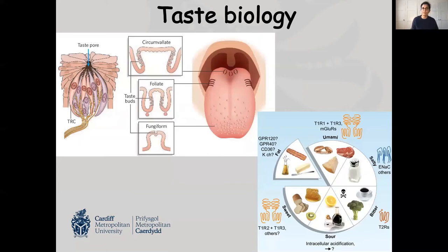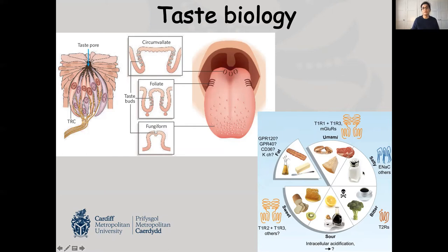Before we talk about Brussels sprouts and why we like or dislike them, let's look at the structure of our tongue and how we taste. On our tongue we have papillae, and within these papillae we have taste receptor cells. Taste receptors bind to the taste compound. When the taste compound binds to the receptor, the message goes to our brain and we get the sensation of taste. Humans can taste up to six taste compounds: salty, bitter, sour, sweet, umami — which comes from glutamate — and the sixth one, most recently introduced, is the creamy or fat taste. Depending on our genes, we taste all these within our diet.